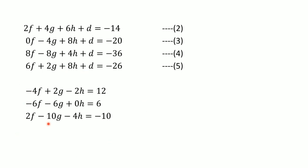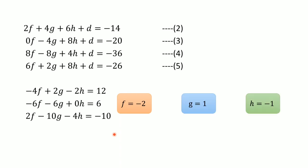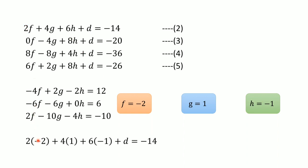We now have three equations in three unknowns. Solving these linear equations gives f = −2, g = 1, and h = −1. To find d, we substitute these values into any one of the four original equations. Using the first equation: 2(−2) + 4(1) + 6(−1) + d = −14, which gives d = −8.